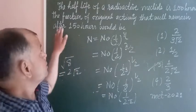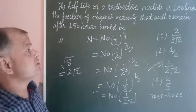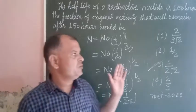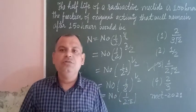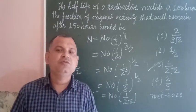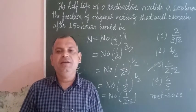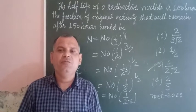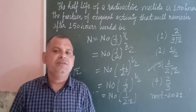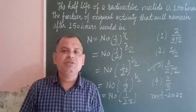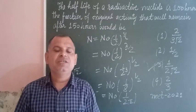So the fraction of original activity that will remain after 150 hours would be 1/(2√2). Using two formulas—T = N × T1/2 and N = N₀(1/2)^N—we can easily solve this question. It's a simple question. I hope you got it. Thanks for watching.